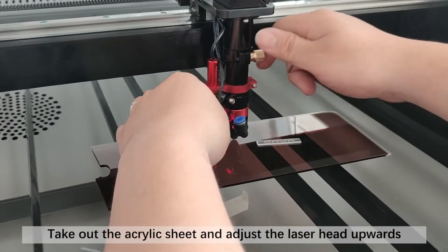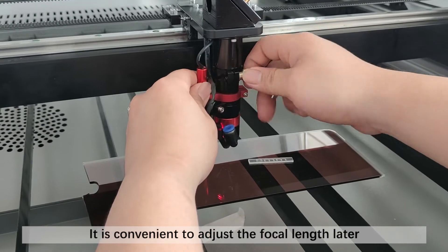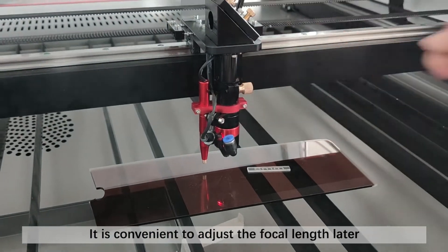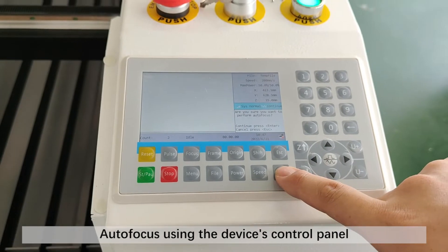Take out the acrylic sheet and adjust the laser head upward. It is convenient to adjust the focal length later. Autofocus using the device's control panel.